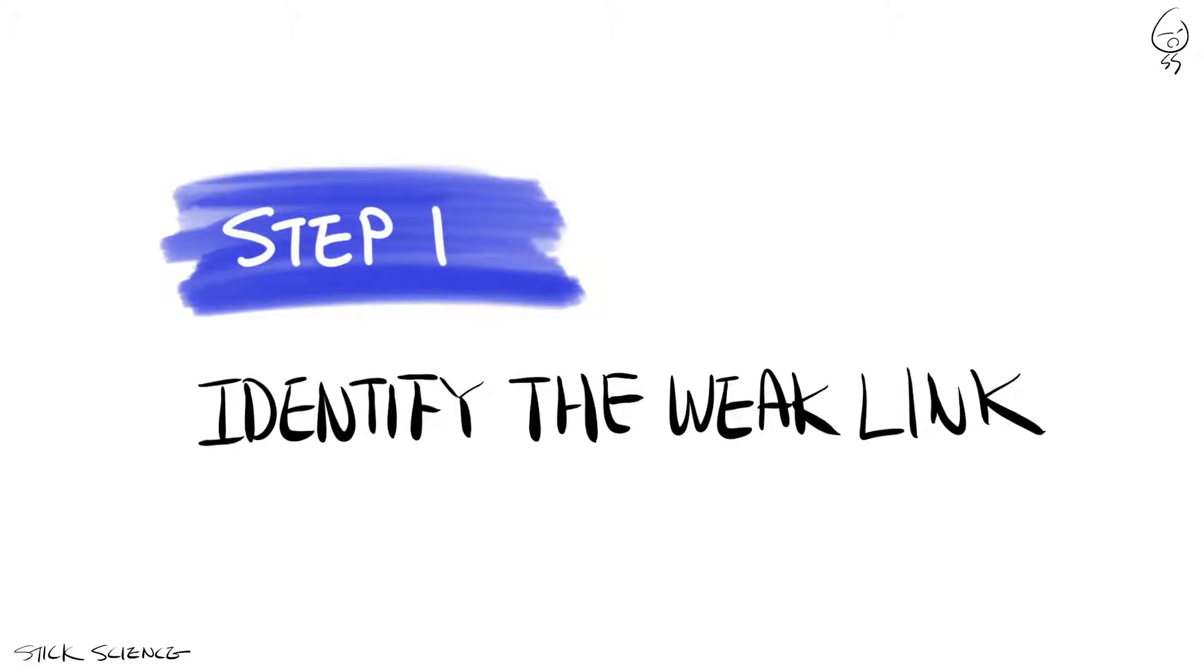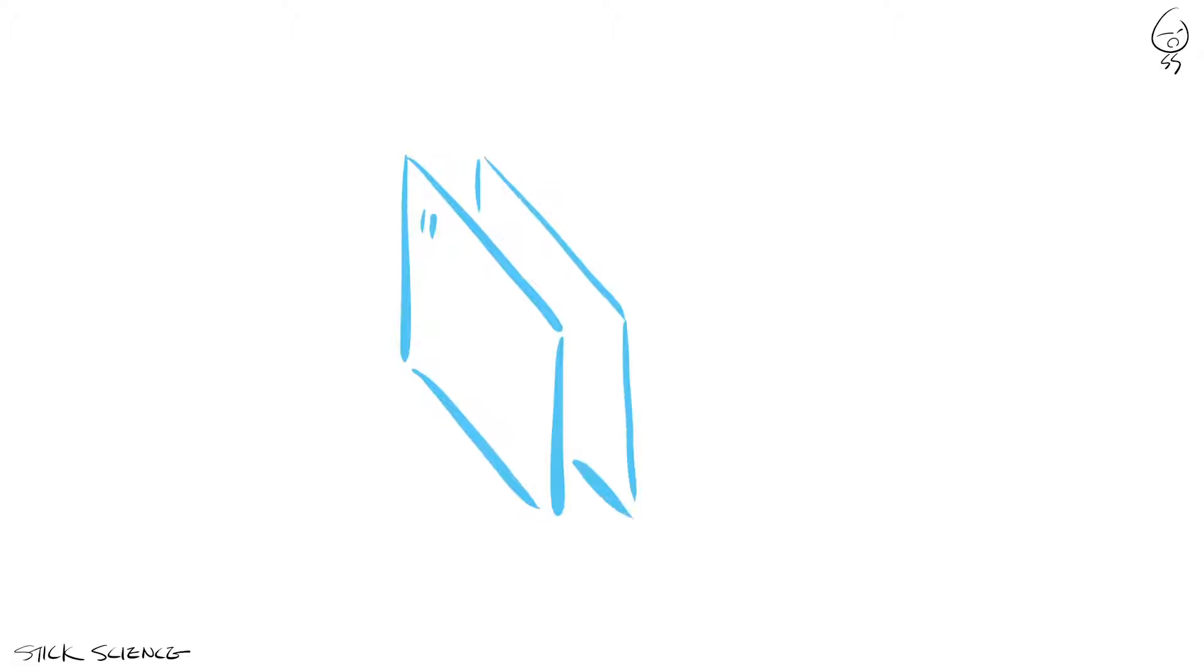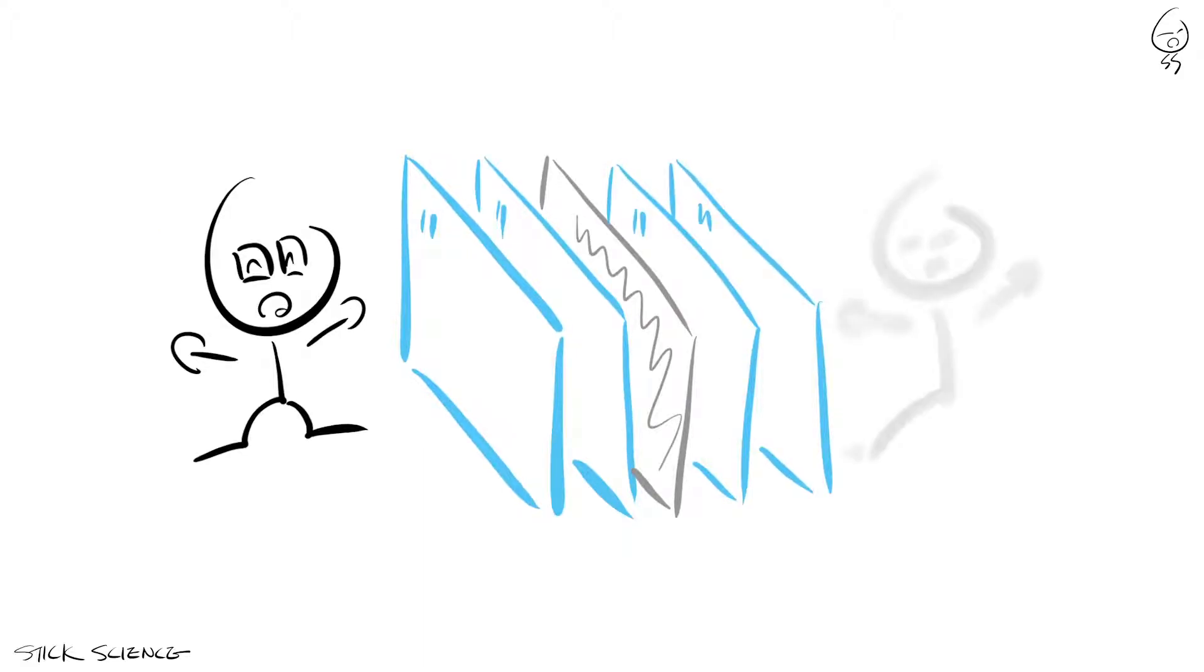The whole point of significant figures is to identify the precision of the measurement. So if we're multiplying or dividing numbers with different precisions of measurement, the end result will only be as accurate as the least precise measurement. Kind of like how when you're looking through a bunch of windows, your view is only as clear as the dirtiest sheet of glass.